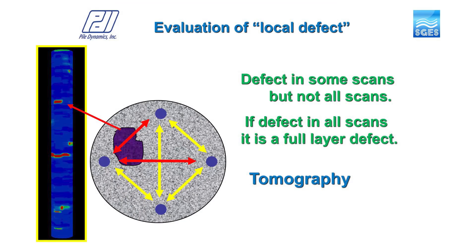Conducting a CSL test eliminates the uncertainty from the PIT test. Integrity evaluation by combining PIT and CSL testing enhances confidence in qualifying the pile. There are certain aspects to note: if scanning six profiles and some show loss of signals while others do not, it implies the defect is localized to a certain quadrant. This can be evaluated in a three-dimensional picture by conducting tomography scans.